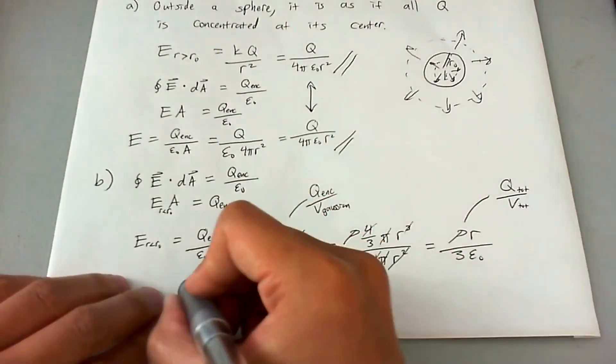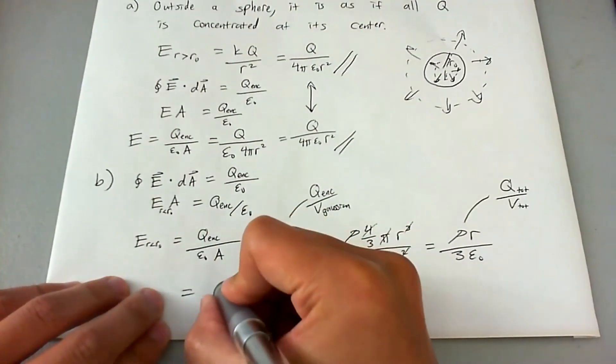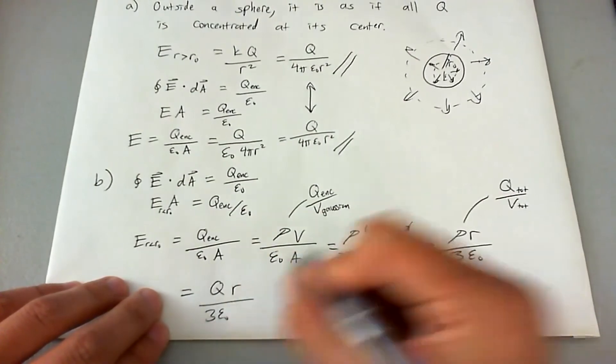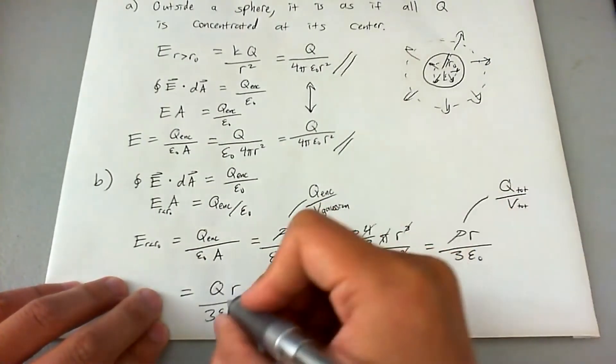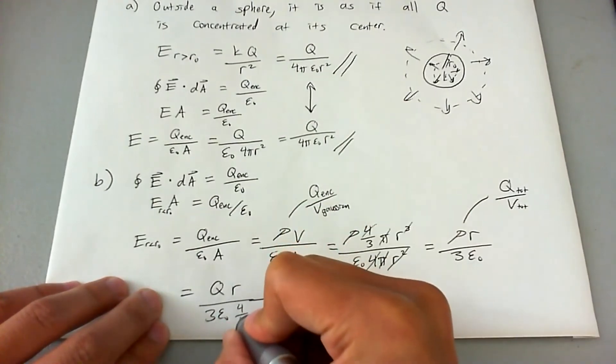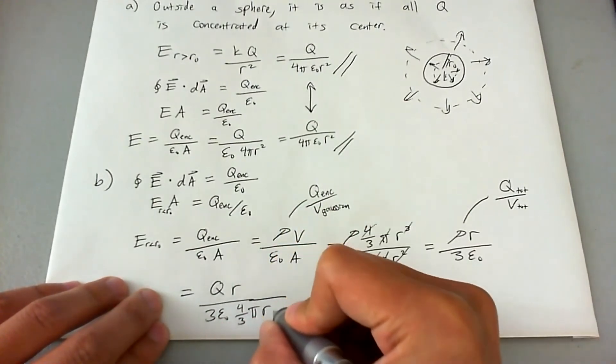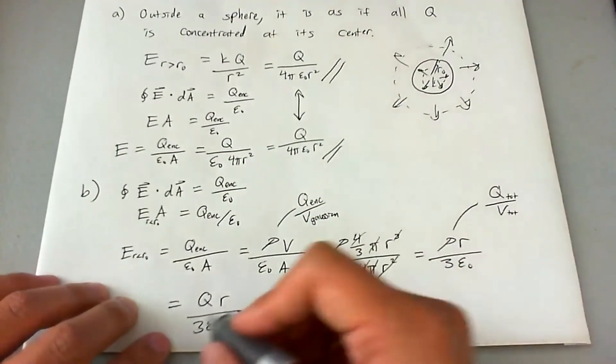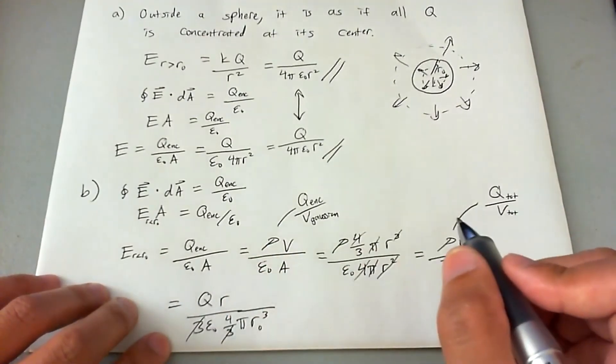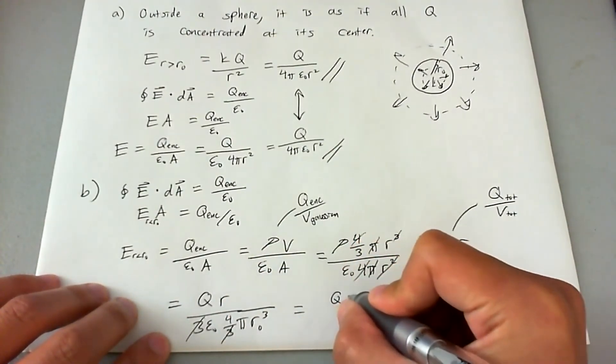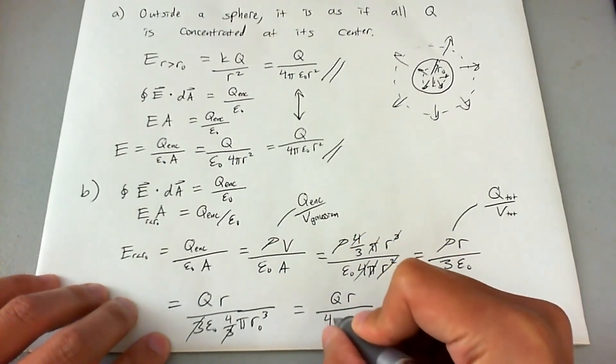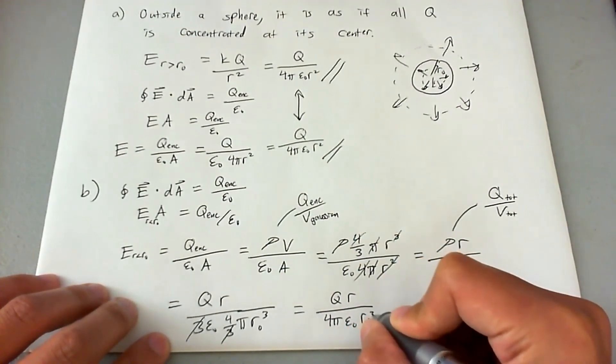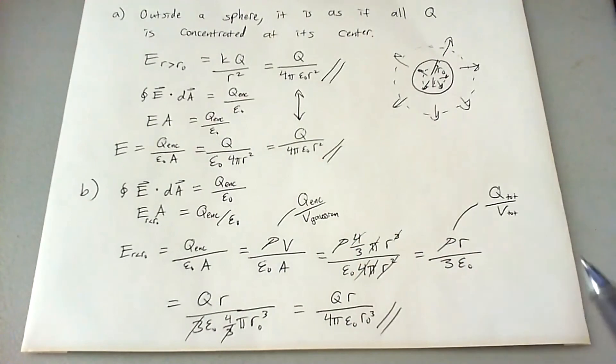So let's go ahead and do that. We'll say since Q total is really just Q, we're going to say it's QR divided by 3 epsilon naught. And then we put the volume total down here. Now, the total volume of the sphere is 4/3 π r naught cubed. Do a few more cancellations. We got 3 canceling out with 3 here. And we end up with QR divided by 4π epsilon naught r naught cubed. And that is the final answer to this problem.